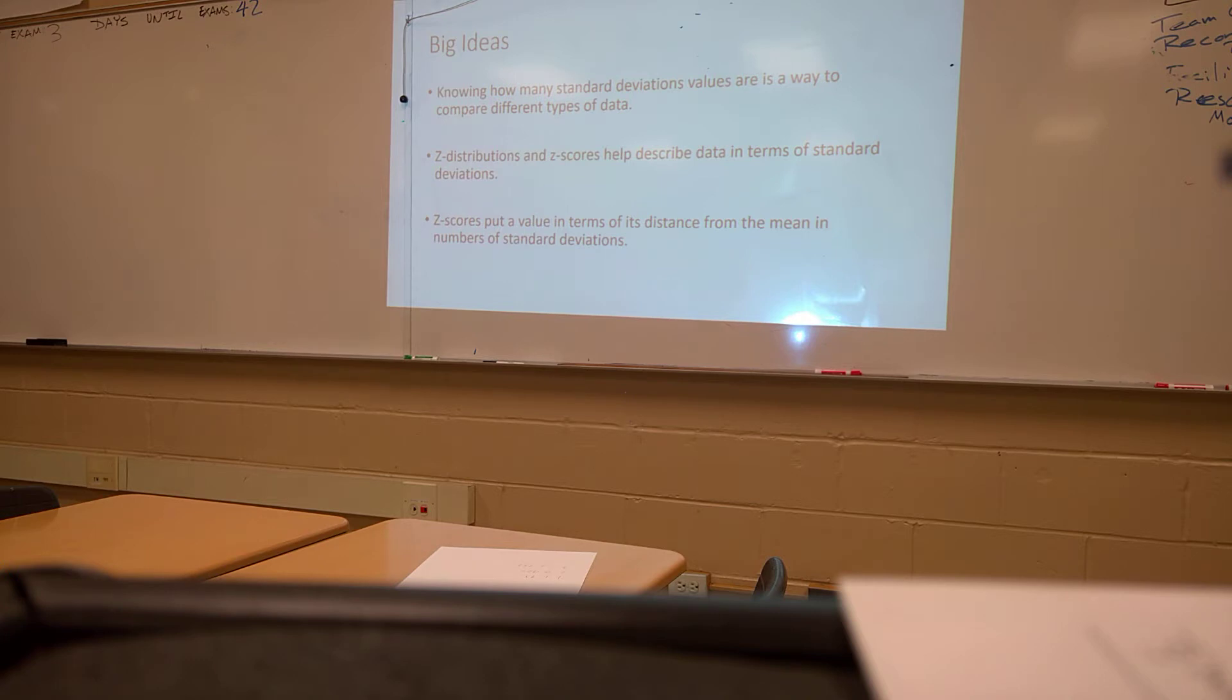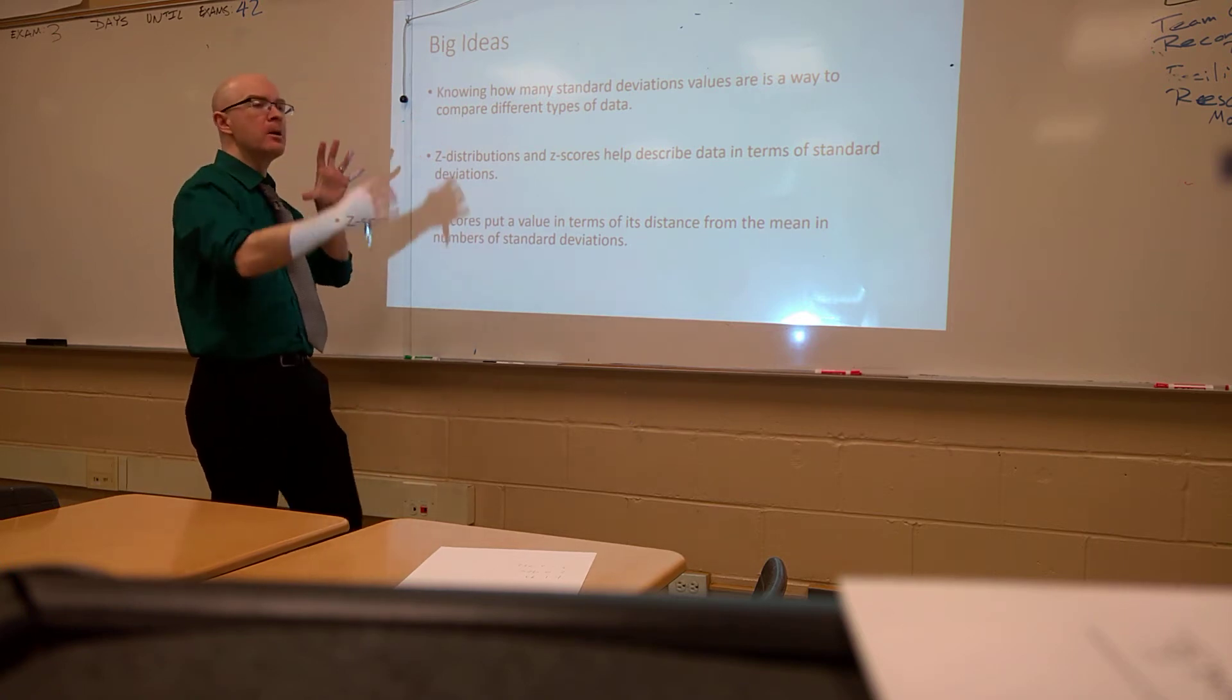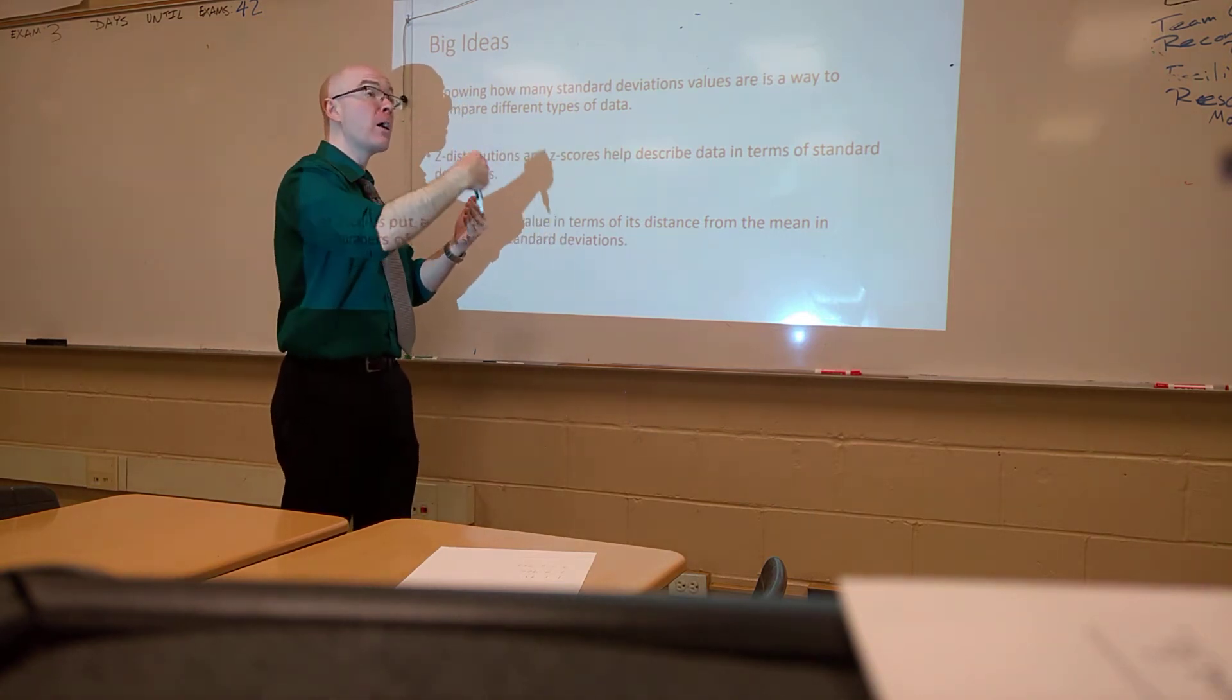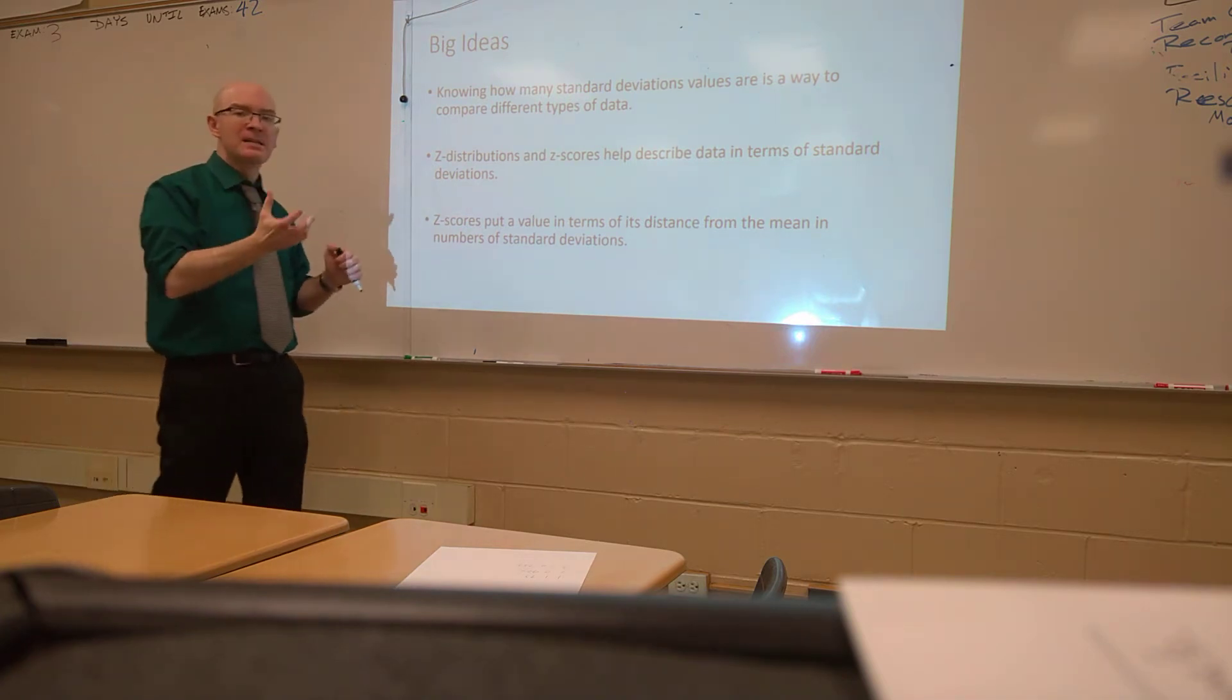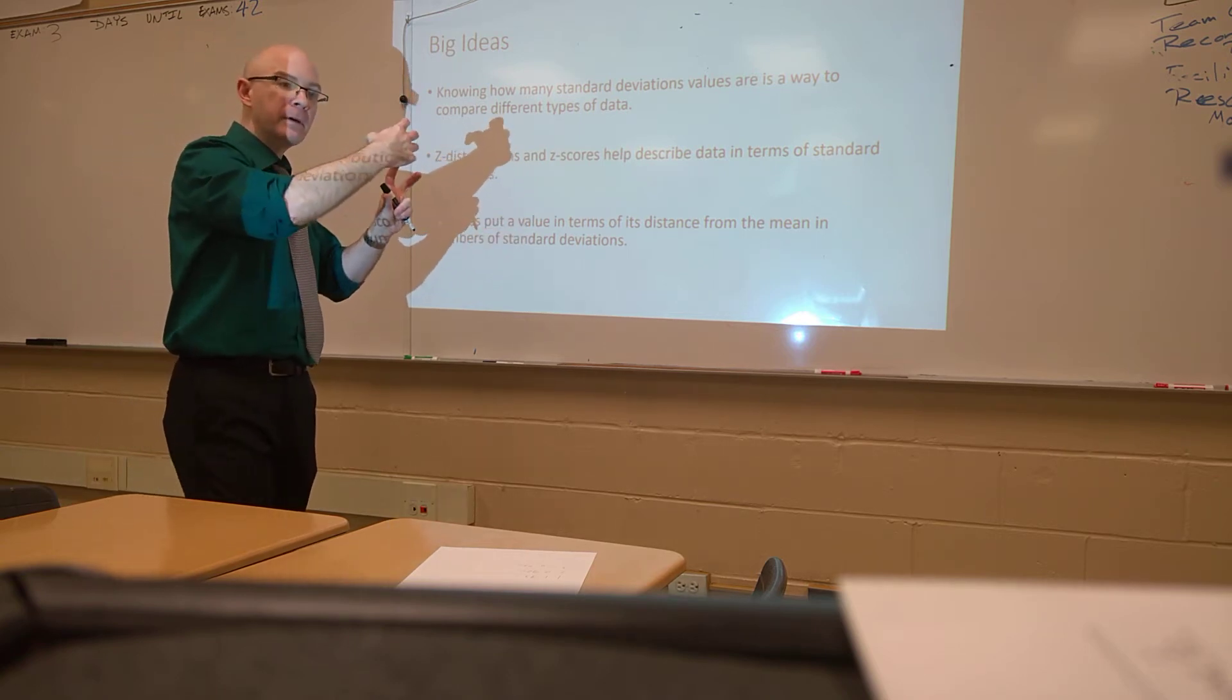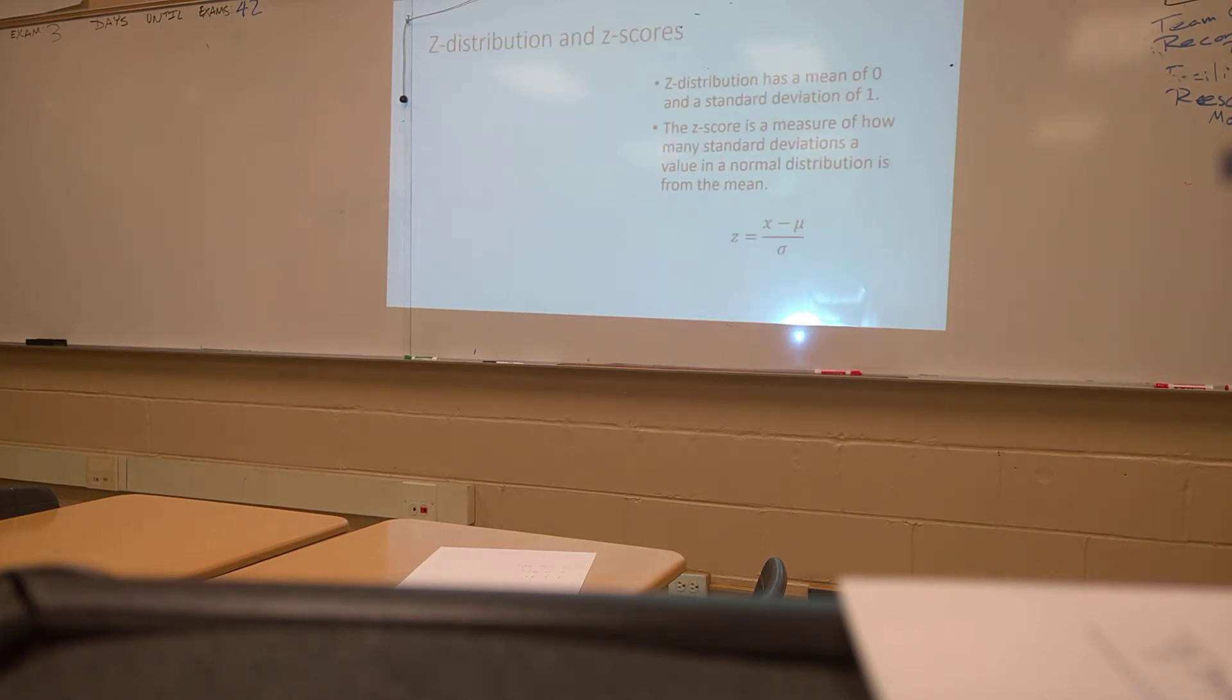Some of the big ideas is that knowing how many standard deviations a value is on a normal distribution curve is a very helpful thing. It's a way to compare different types of data that might not have the same mean or the same standard deviation. But if we can pull those out and we just look at standard deviations, that gives us an idea for how far something is away from the mean, which is incredibly useful. The Z-distributions and Z-scores can help us describe that data in terms of the standard deviations. And the Z-scores can put a numerical value on that. It's just a measure of the distance of a value from the mean in terms of standard deviations. That is our unit of measurement.